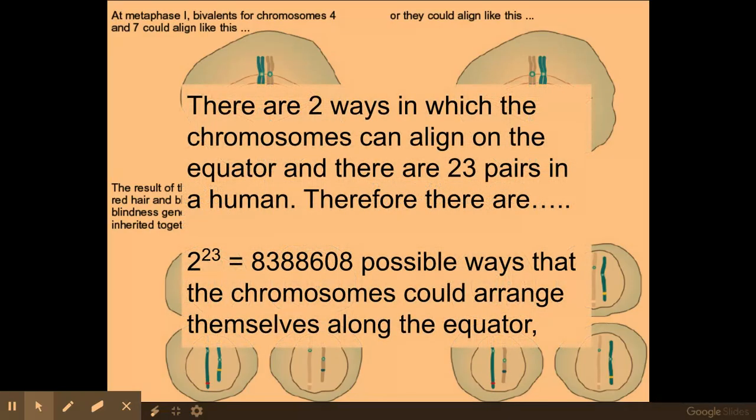Now there are two ways in which chromosomes can line up along the equator, and there are 23 pairs of chromosomes within a human. Therefore there are 2 to the power 28, which is more than 8 million possible ways in which these chromosomes can arrange themselves along the equator. This is why your eggs and your sperm, yes they'll be very similar, but it's very unlikely that you're going to get one that's genetically identical to each other.